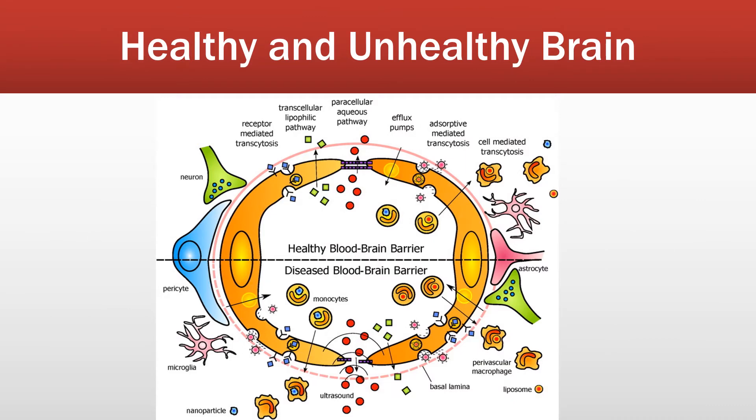Here I have a diagram of a healthy brain and an unhealthy brain — as you can see, it's half and half. So what is a blood-brain barrier? The blood-brain barrier describes the unique properties of the microvasculature of the central nervous system. The short terms for that are BBB and CNS.